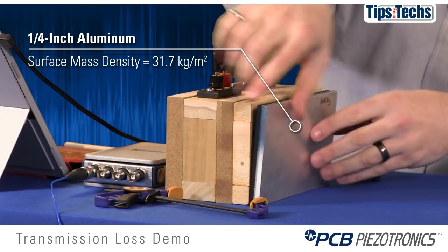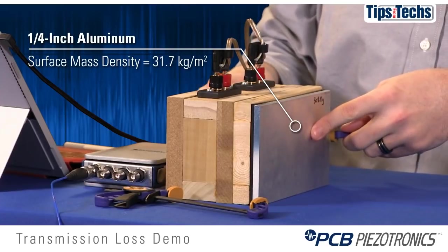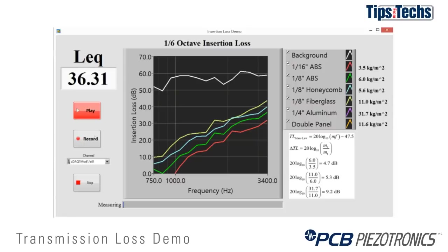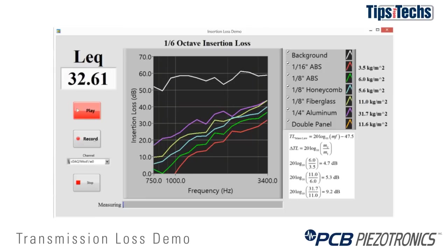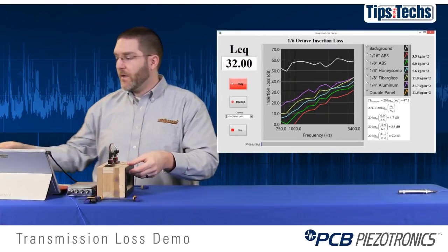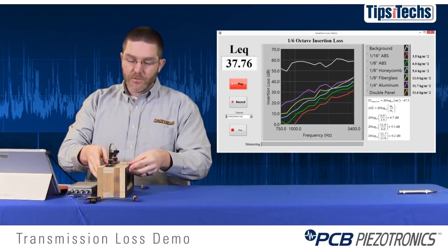Finally, we'll go to a very heavy material — this is our quarter-inch aluminum. We would expect this to block a lot of the sound. Looking at the mass law prediction on screen, going from the fiberglass to the aluminum, we would expect almost 9 dB higher insertion loss. We see anywhere from 5 to 10 dB increase at low frequencies. At high frequencies we don't see a lot of increase, probably because of leaks around the edges of the gasket sealing system. One important takeaway: you have to have very good sealing if you're trying to do high transmission loss work.